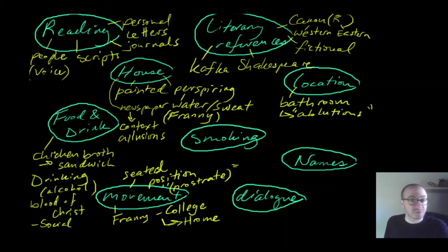In terms of names, there are multiple names for these characters, not just multiple characters and multiple names. So, for example, we have Zachary is Zooey, Frances is Franny, but Franny also has another name that Buddy calls her, or when Zooey is pretending to be Buddy, he calls her Flopsy. And that's a sort of endearing but name that sort of connotes this clumsy behavior of her, that she is still a child, perhaps.